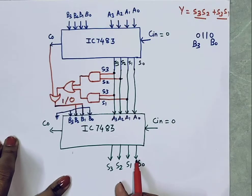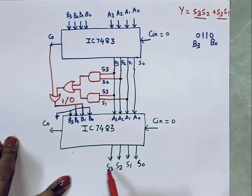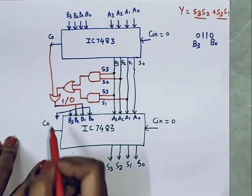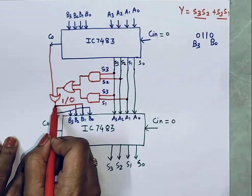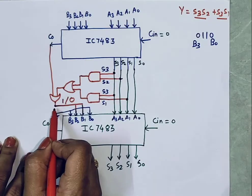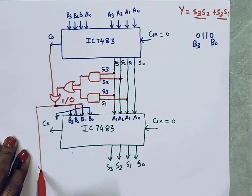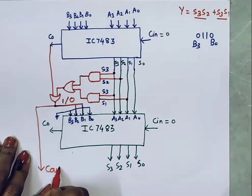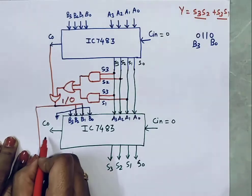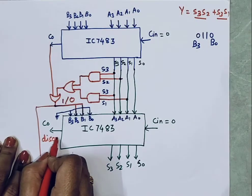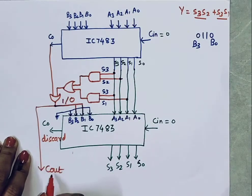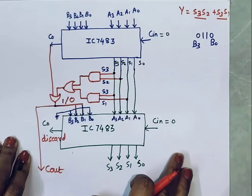The actual output is S0, S1, S2, S3 from the second IC. We will consider the output of this combinational circuit as the carry out, and discard the carry from the second IC. This carry from the first IC is our main carry out.